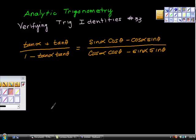This was a challenge question today in analytic trigonometry, which was verifying trig identity number 33. And what we're supposed to prove here is that tan alpha plus tan theta over 1 minus tan alpha tan theta is the same as sine alpha cosine theta minus cosine alpha sine theta all over cosine alpha cosine theta minus sine alpha sine theta.